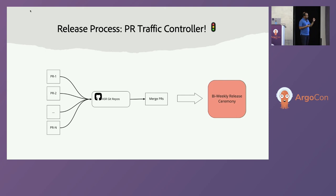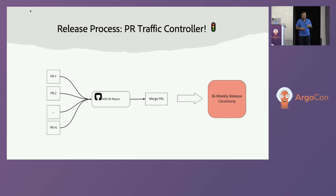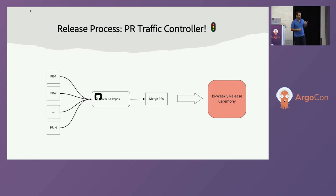Since we have a lot of PRs coming into these libraries, we naturally have to handle a lot of PR traffic in terms of merge conflicts and making sure releases go well. Our previous solution was a two-week release ceremony using Jenkins. Every time we did a release, I had to go to therapy — it was super painful. I'll talk more about what the pain points were.